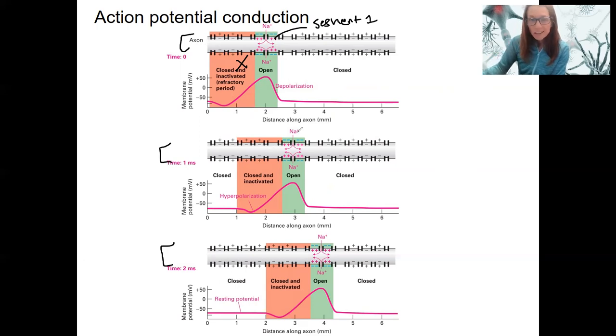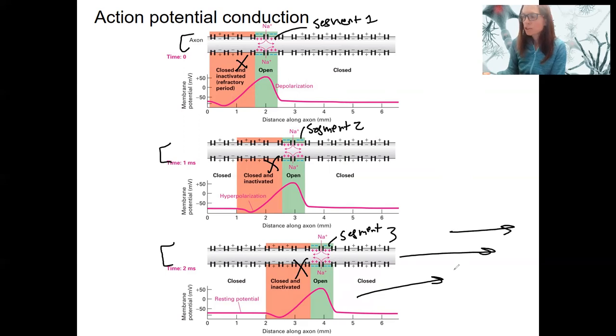So the one-direction conduction, unidirectional conduction of the action potential is due to this transient inactivation of the sodium channels, even though sodium ions actually diffuse passively in both directions. Here's our segment two, but segment one cannot have an action potential occur. Segment three has action potential. Can't go back to our segment two. It's going to go that way only. One direction.